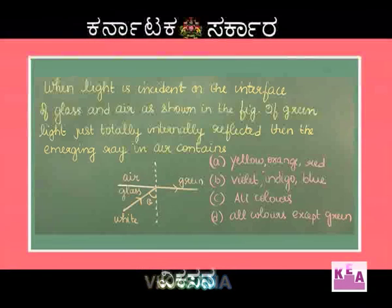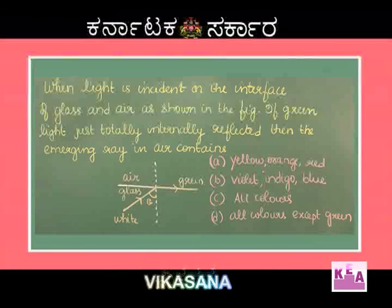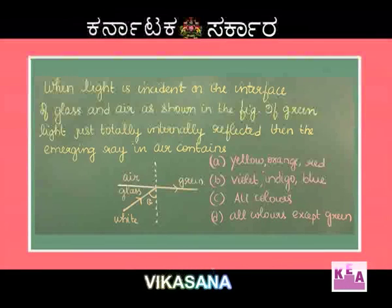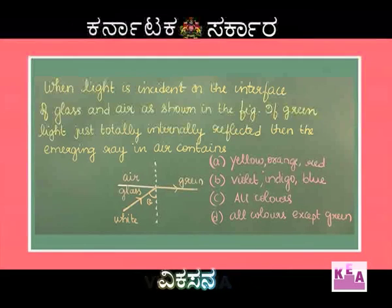When light is incident on the interface of glass and air as shown in the diagram, if green light just undergoes total internal reflection, then the emerging ray in air contains - options: A) yellow, orange, red; B) violet, indigo, blue; C) all colors; and D) all colors except green.